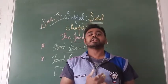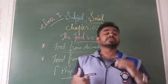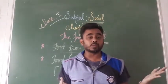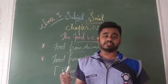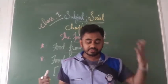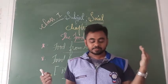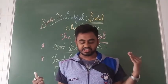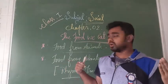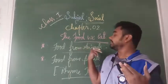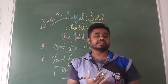So answer me: what food do we get from animals? The food items we get from animals are meat, fish, eggs, ghee, milk, paneer, and cheese. All these things we get from animals and that food we eat in our daily life.